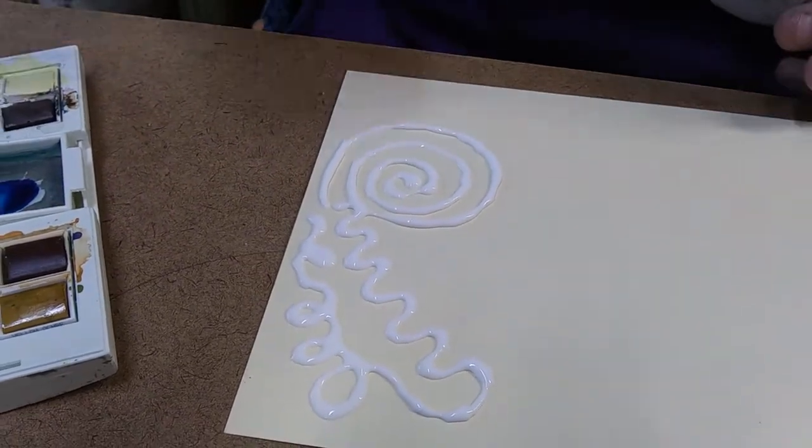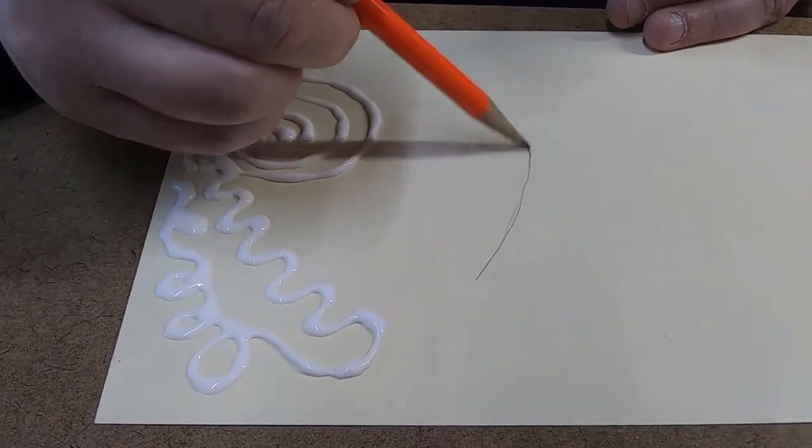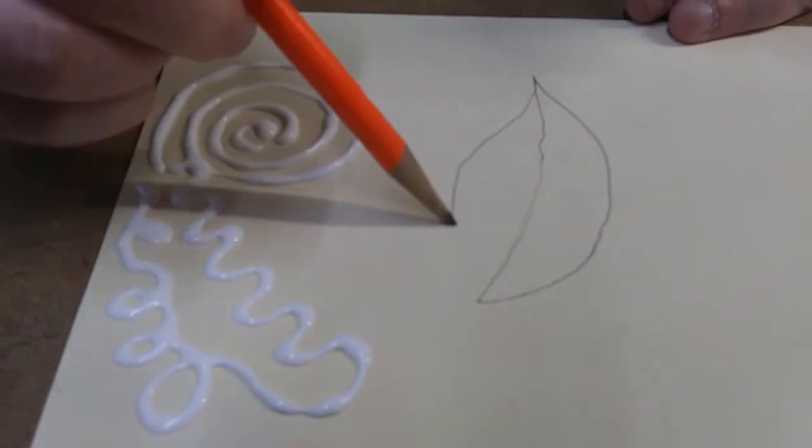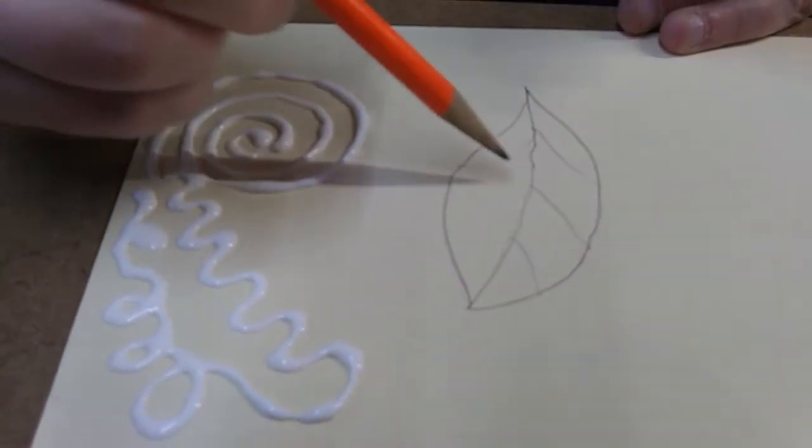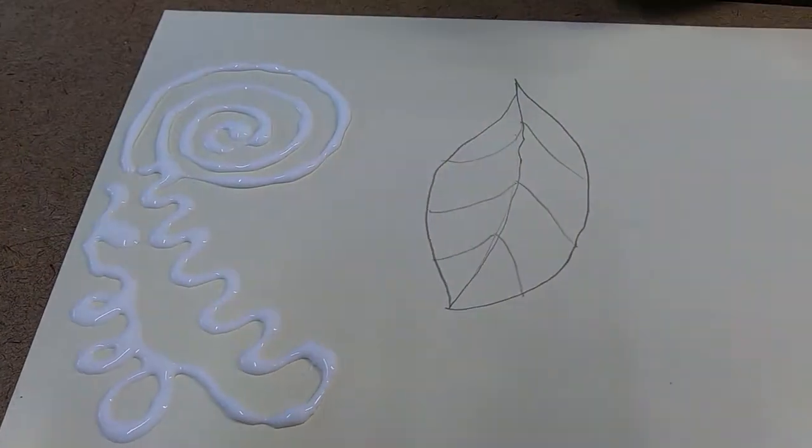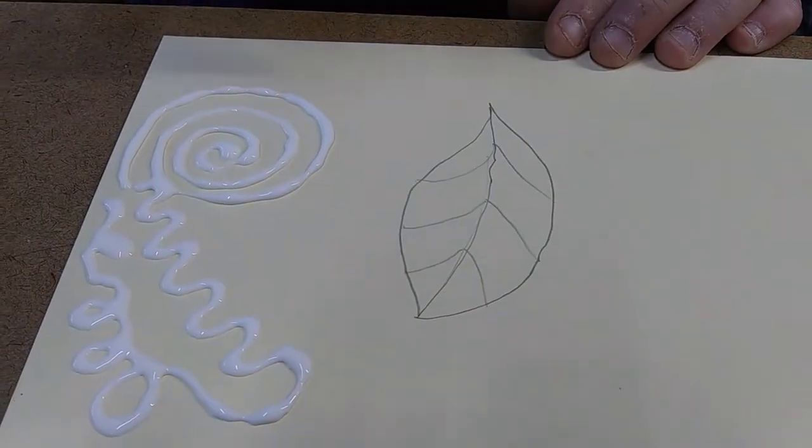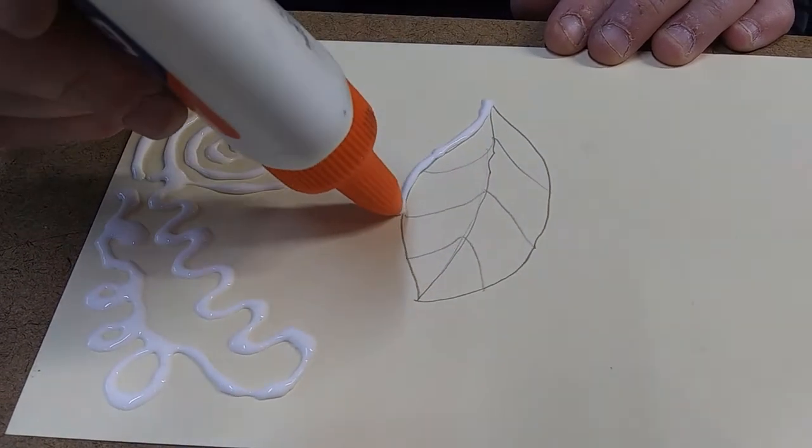Now I'm going to use my pencil and I'm going to draw myself some lines that I'll follow. So I'm going to do a leaf with veins. And after I draw my lines, I'll take my glue and I will follow along my pencil lines.